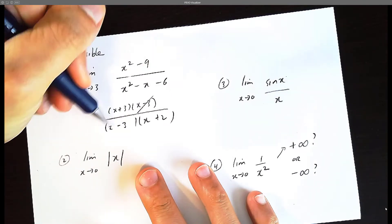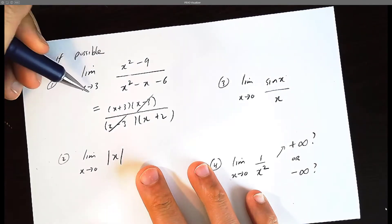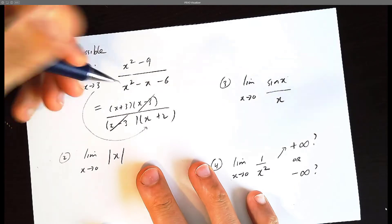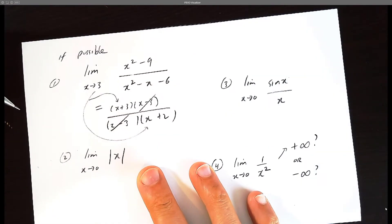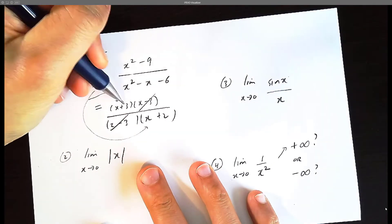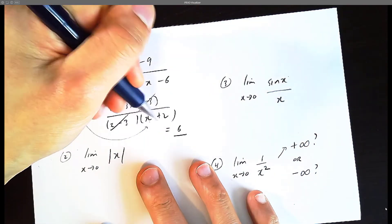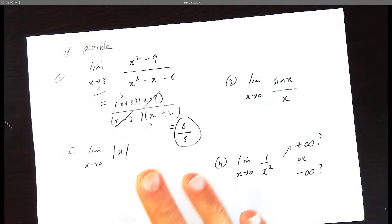And notice how the x minus 3 is, they cancel, and now we can substitute 3 into here, and also up here. So when you substitute 3, 3 plus 3 is going to be 6, over 3 plus 2 would be 5. So that's the answer.